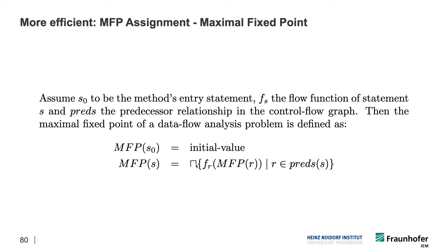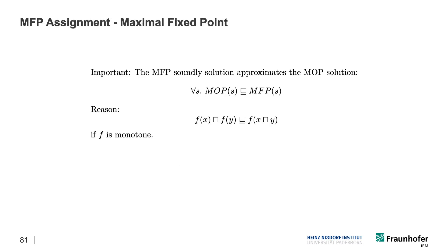What's really interesting about the MFP solution — which also holds for the chaotic iteration since they are essentially identical — is that the MFP solution soundly approximates the MOP solution. For all statements S in your procedure, you get the guarantee that the MFP solution at S is at least as large as the MOP solution that ideally we'd like to compute but cannot, because it's uncomputable in general. This gives us the guarantee that the MFP solution is always a sound approximation — we always land in the safe area when we reach the fixed point.